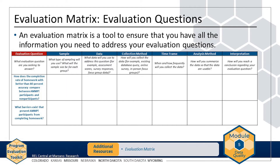To match data sources to your evaluation questions, you can use an evaluation matrix, a helpful tool to ensure that you have all the information you need to address your questions. Start by adding the final evaluation questions that you drafted and refined in Module 2 to the first column of the matrix. The AMP evaluation team started the evaluation matrix by adding two of the evaluation questions. If you do not have evaluation questions yet, review Module 2, which will guide you through the process of drafting evaluation questions. The evaluation matrix is available on the resources page of the website.